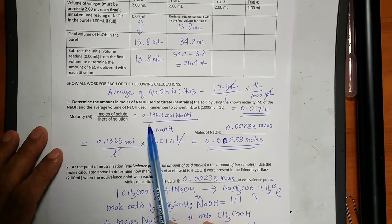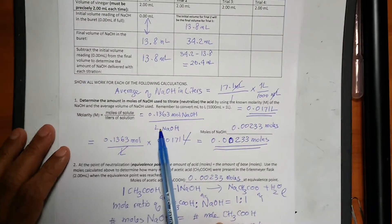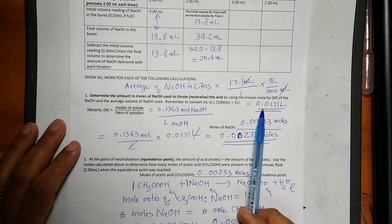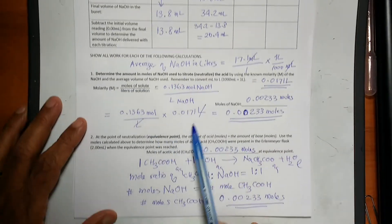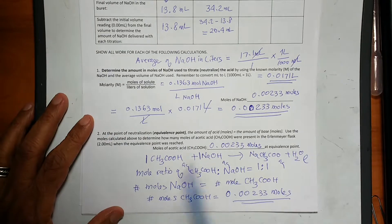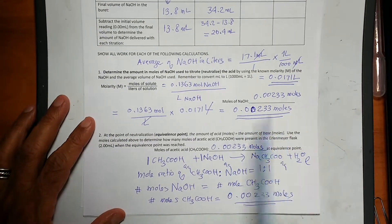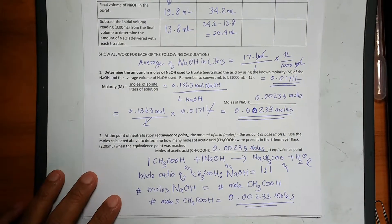The moles of sodium hydroxide is the molarity of sodium hydroxide multiplied by its volume in liters. Liter with liter will cancel out, and then we have 0.00233 moles of sodium hydroxide.